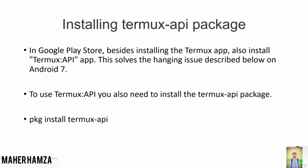After installing, your phone should have both the Termux application and the Termux API app. You can't see the Termux API app in your application list, but it is internally present inside your mobile. To install the Termux API package, use this command: `pkg install termux-api`. This connects the Termux API application to your Termux application.